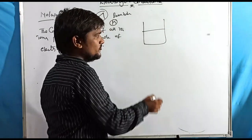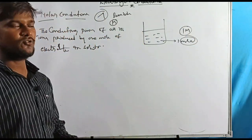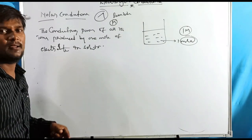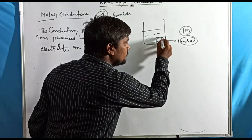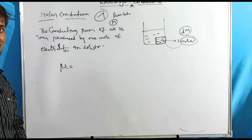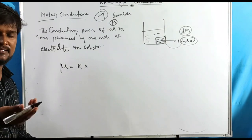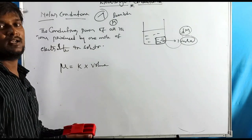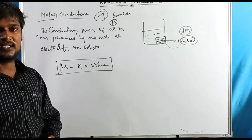For molar conductance, imagine a vessel where the solution concentration is one molar. The molar conductance is the specific conductance κ multiplied by the volume of the solution containing one mole of electrolyte. So: μ = κ × V, where V is the volume of solution in cm³ containing one mole of electrolyte.